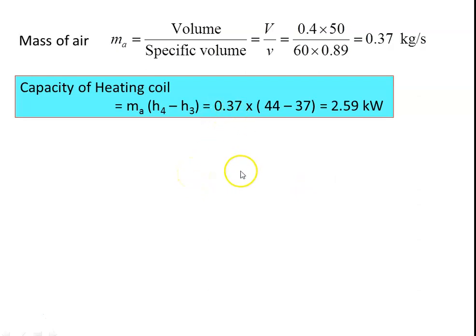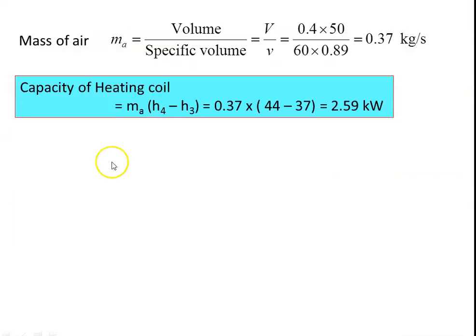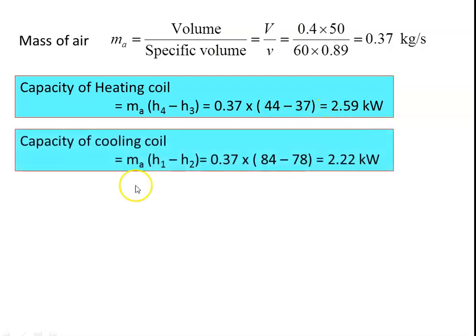Cooling coil capacity uses h1 (initial) to h2 (final), so = ma × (h1 − h2). Capacity of heating coil = ma × (h4 − h3) = 0.37 × (44 − 37) = 2.59 kilowatts. Capacity of cooling coil = ma × (h1 − h2) = 0.37 × (84 − 78) = 2.22 kilowatts.